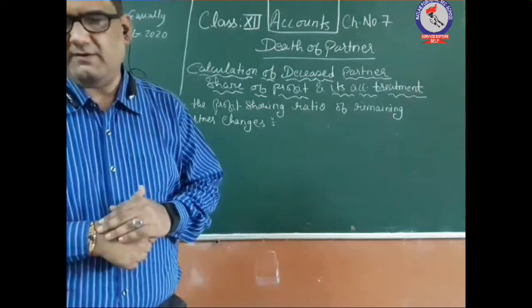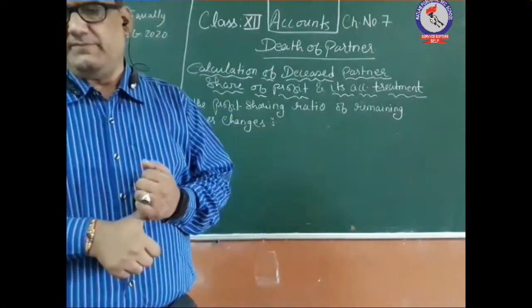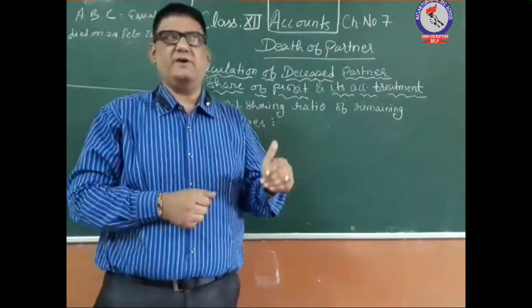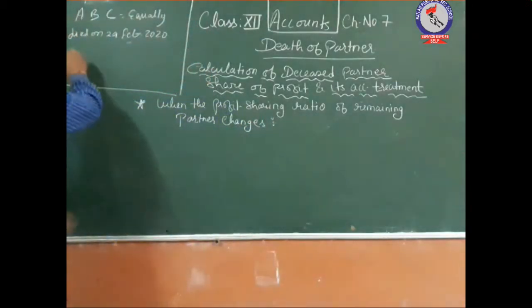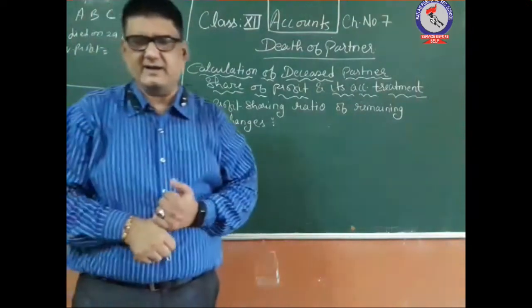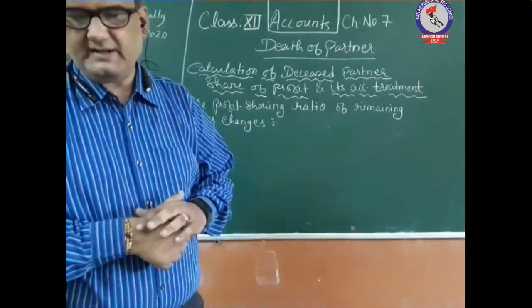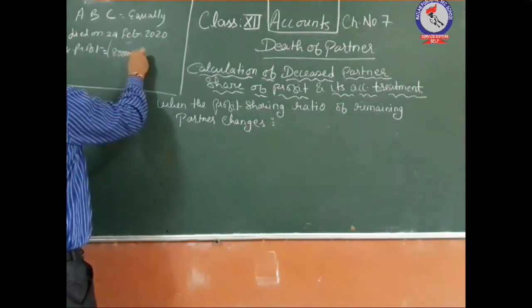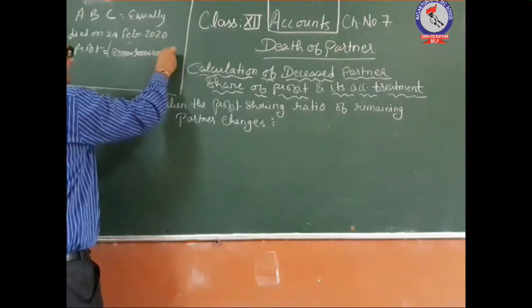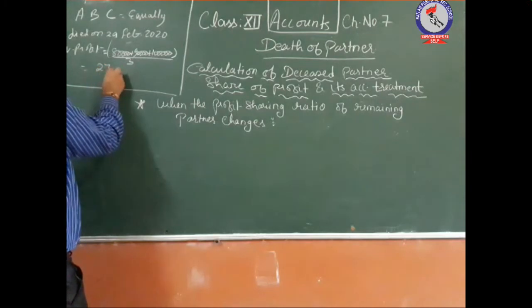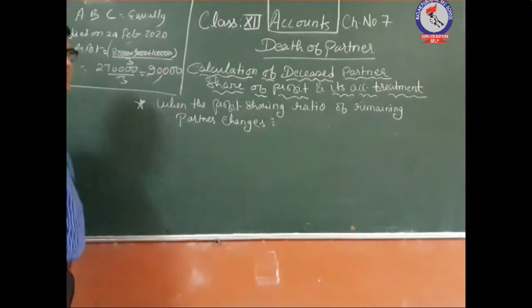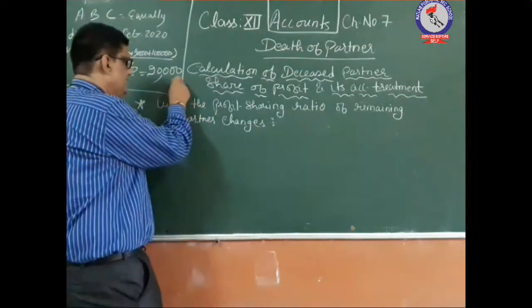C's share of profit was to be calculated on the basis of the average profit of three completed years. To find the average profit: total profits of the last three years were 80,000, 90,000, and 1,00,000 respectively, divided by 3. This gives a total of 2,70,000 and an average profit of 90,000 rupees.